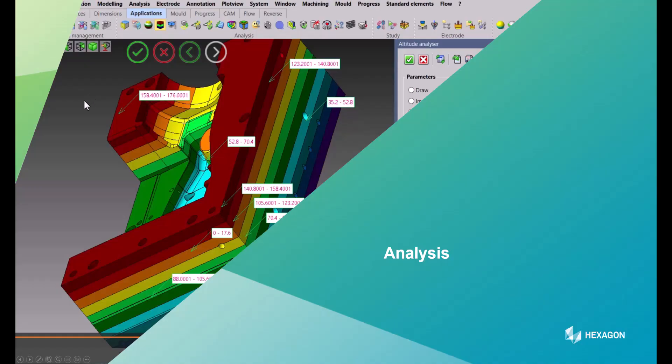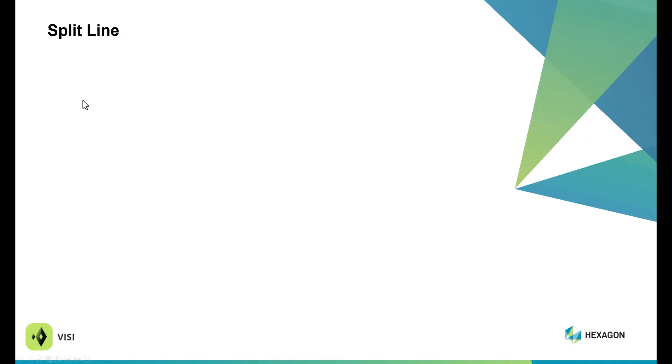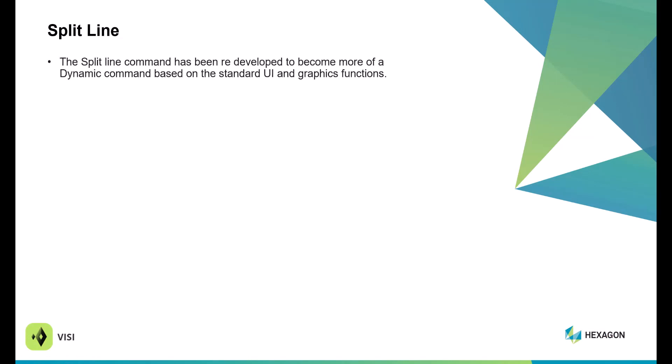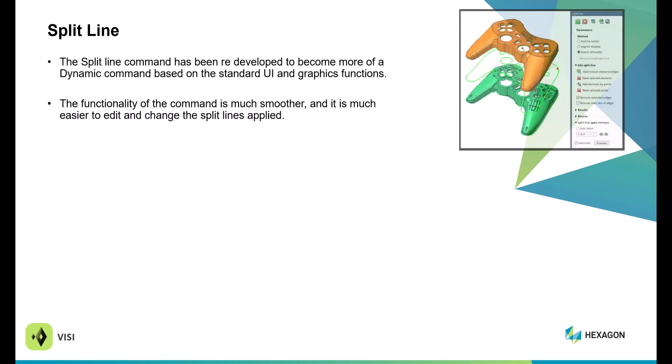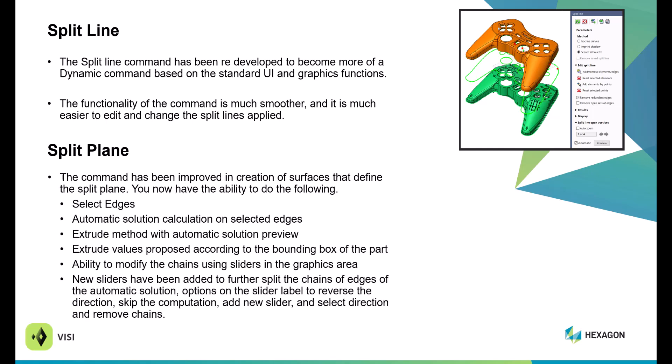Now we're going to go into the analysis dropdown and what's new in 2023. There have been big changes, starting with the split line command. The entire user interface has been completely revamped — it's much easier to use with a much smoother process to change, edit, and apply a split line. The same is true with the split plane command, with new enhancement options including the ability to select edges (previously you were only able to pick wireframe), an automatic solution calculator, options to extend the method for the automatic solution, extrude values within a bounding box, and the ability to modify the chain after selection.